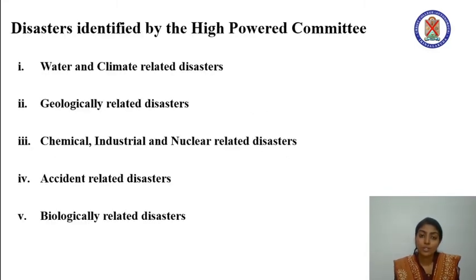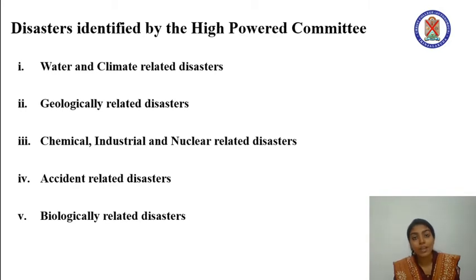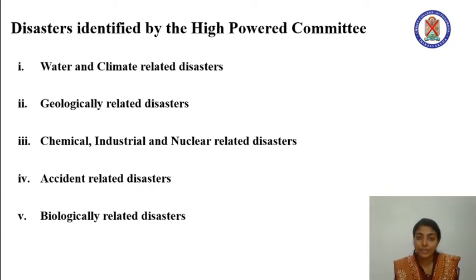Coming to our topic, disasters identified by the High Power Committee, we have five different types: water and climate related disasters, geologically related disasters, chemical, industrial and nuclear related disasters, accidental related disasters, and finally biologically related disasters. Today we will be dealing with the topic water and climate related disasters.